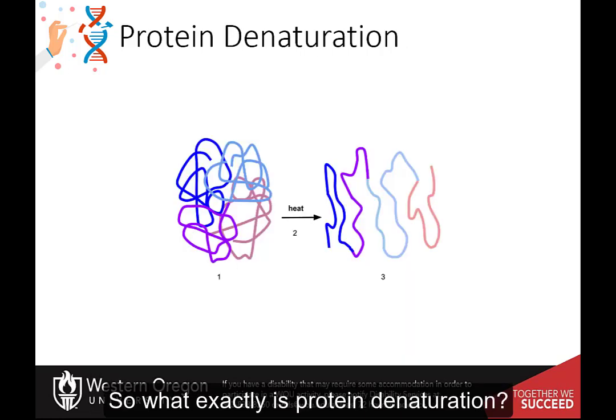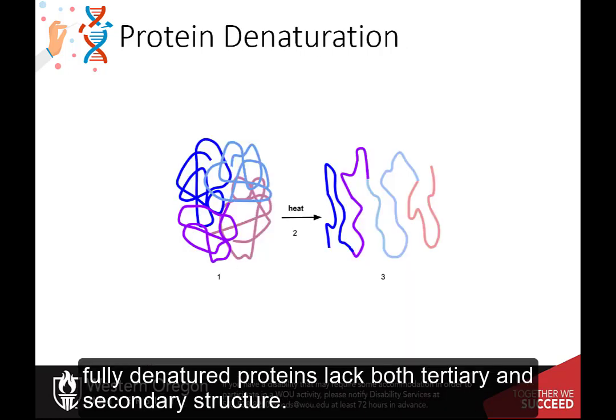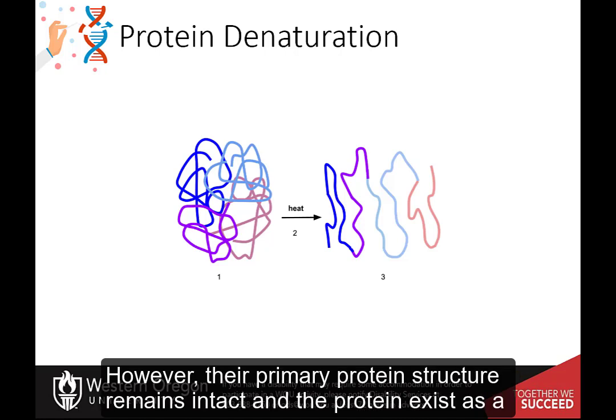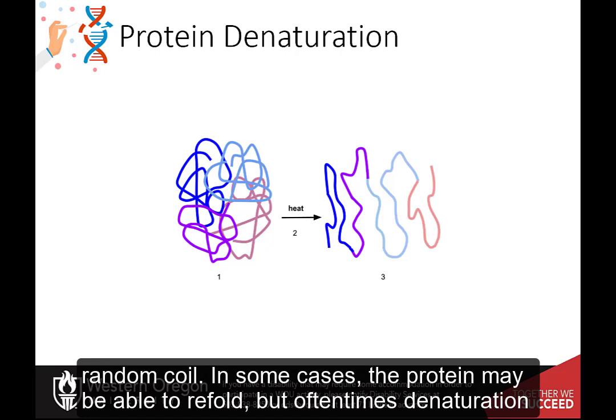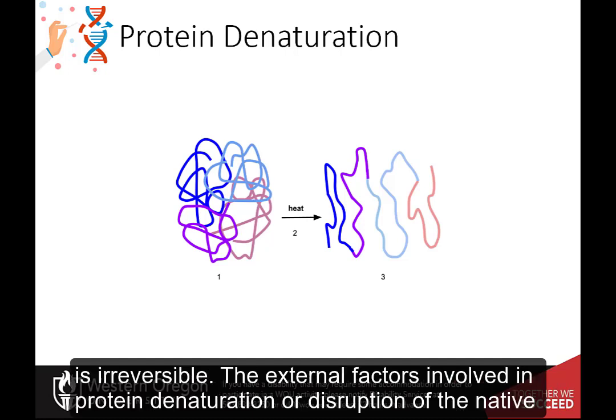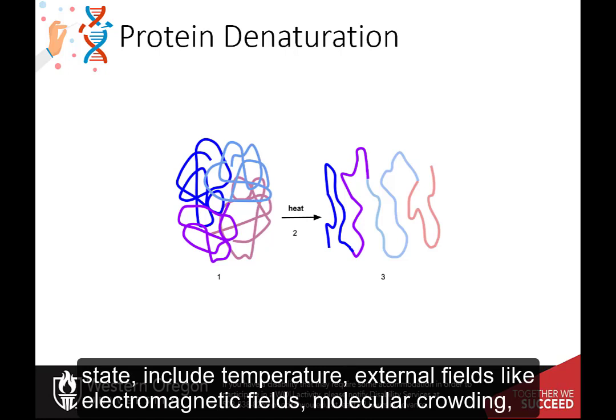So what exactly is protein denaturation? Fully denatured proteins lack both tertiary and secondary structure. However, their primary protein structure remains intact and the protein exists as a random coil. In some cases, the protein may be able to refold, but oftentimes denaturation is irreversible.